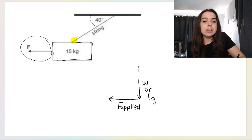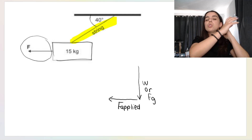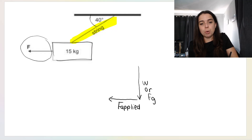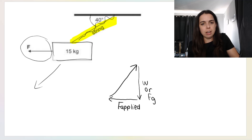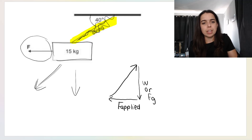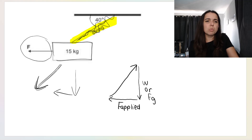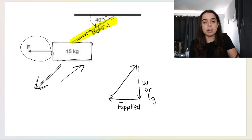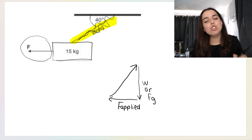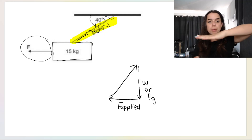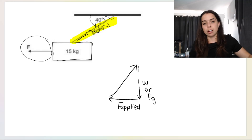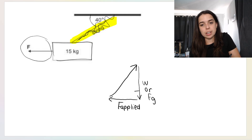Then take a look at the string. The string is pulling this box up and to the right. Think of it like this: if that string wasn't there, the box would fall — because the weight is going down and the applied force is going to the left, the box would fall that way. The string is what's keeping it from falling, pulling it up and to the right. The weight and the applied force are acting at 90 degrees to each other, so this angle is 90 degrees.